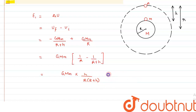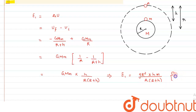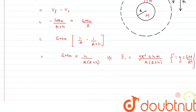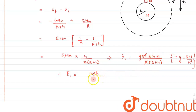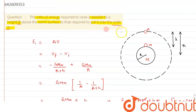E1 can be further simplified. We substitute GM = gR², since the acceleration due to gravity is given by g = GM/R². So E1 becomes gR²·m·h / [R·(R+h)]. One factor of R cancels, giving E1 = mgh / (1 + h/R). This is the expression for energy required to take the satellite from earth's surface to height h.